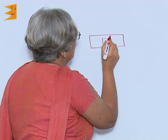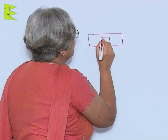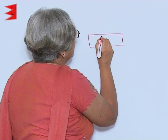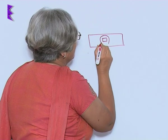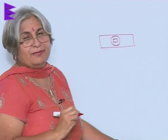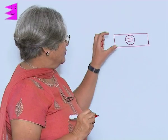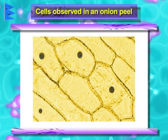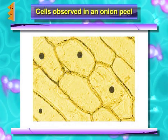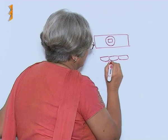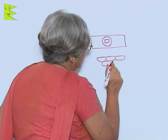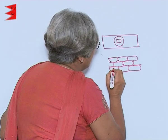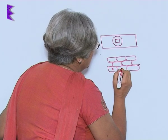Cover it with a cover slip. The slide will look somewhat like this — this is a glass slide, this is the membrane, and this is the cover slip, which can be square or rounded. When you see this structure under the microscope, you will find rectangular cells, and inside every cell there is a nucleus.